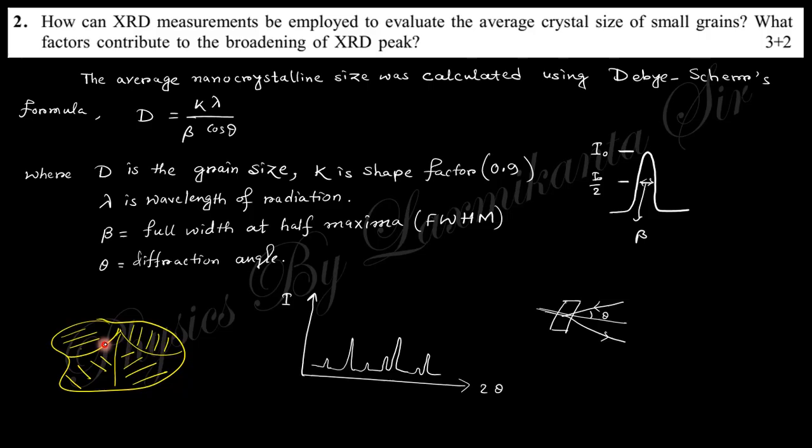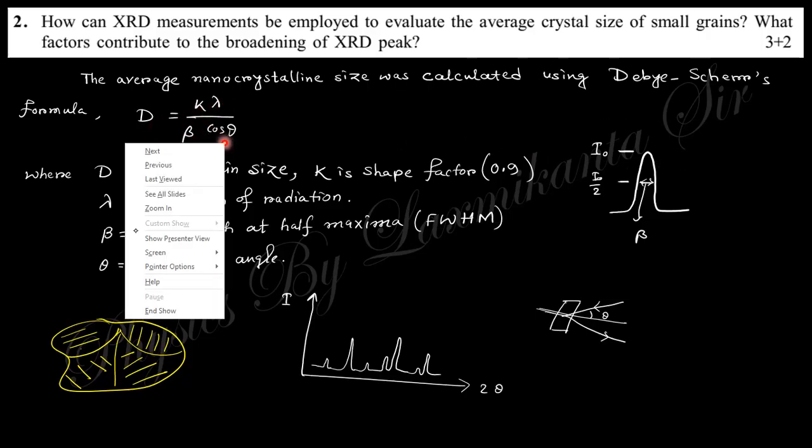The grain size can be obtained from the peak in the XRD experiment using the Debye-Scherrer formula: D = Kλ/(β cos θ), where K is the shape constant, nearly 0.9.